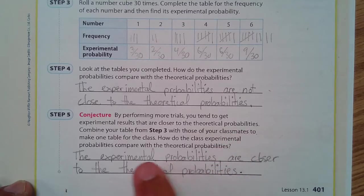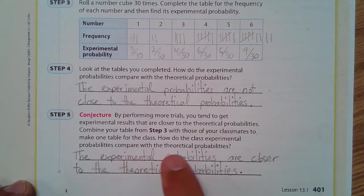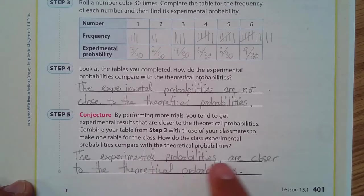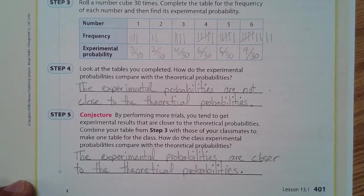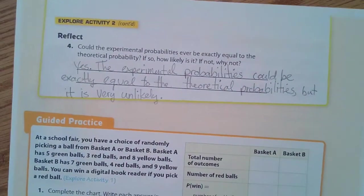Combine your table from step 3 with those of your classmates. Well, I don't have classmates. And to make one table for the class. How do the class experimental probabilities compare to the theoretical probabilities? Well, what should be happening is the experimental probabilities are closer to the theoretical probabilities because you've now combined a whole bunch of trials. You have many more trials that will then get closer and closer to that theoretical, which should be happening.